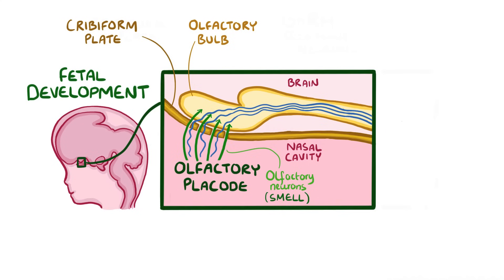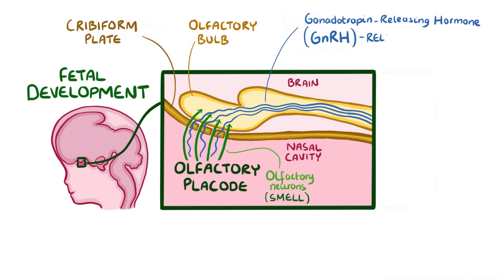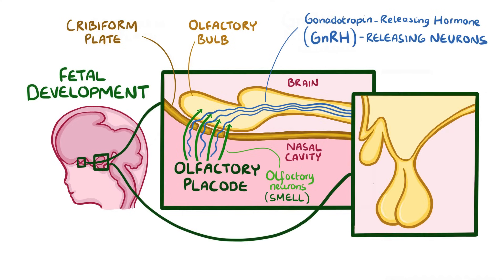The second group contains neurons that release gonadotropin-releasing hormone. These neurons migrate through the cribriform plate and settle in the hypothalamus.